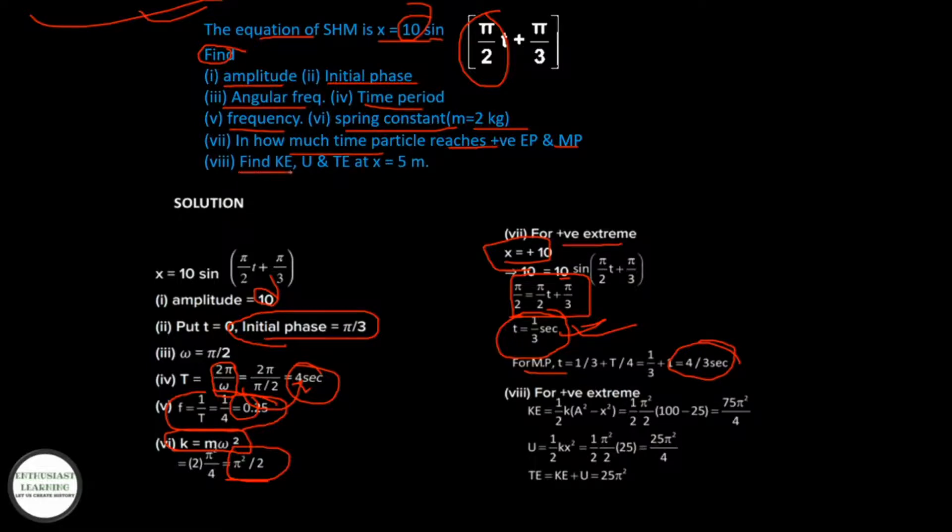(viii) Find kinetic energy, potential energy, and total energy at x = 5 meters. After putting the formula of kinetic energy we get 75π²/4, potential energy as 25π²/4, and total energy as 25π².